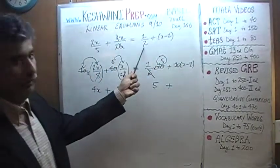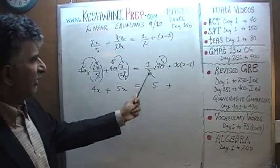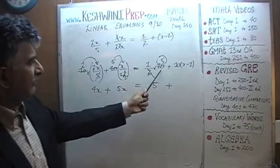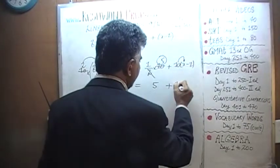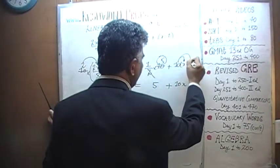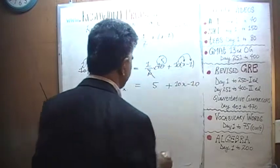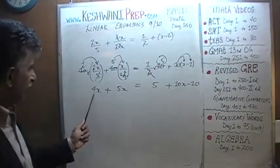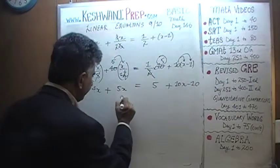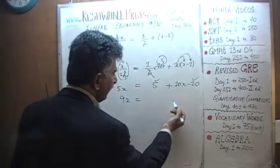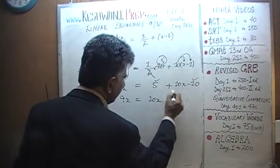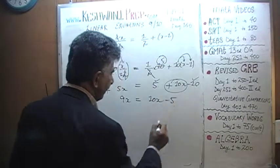Remember the third term did not have any x in it, it was just a half so it becomes a 5 when you multiply it by 10. Half times 10 is 5 and here we will end up with 10 times x which is 10x and 10 times minus 1 is minus 10. Now we just combine everything, we have 4x and a 5x, that's a 9x equals 10x minus 5.